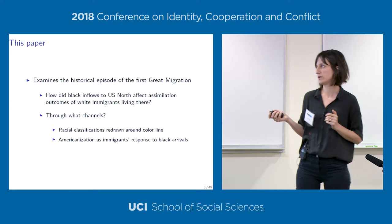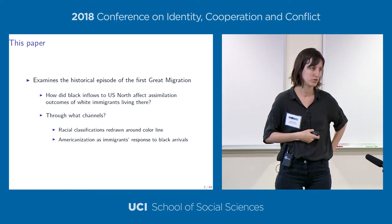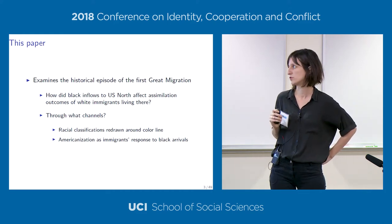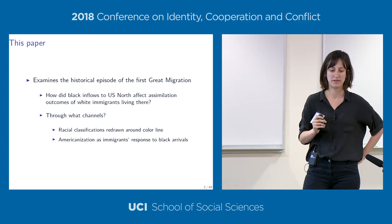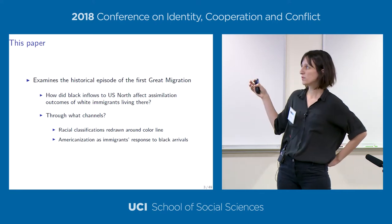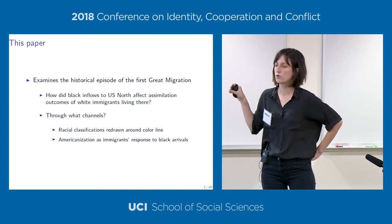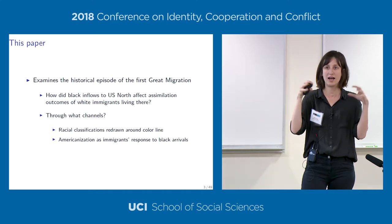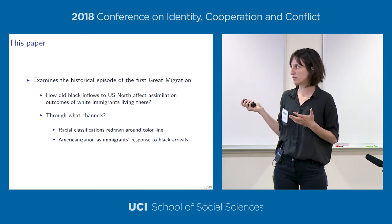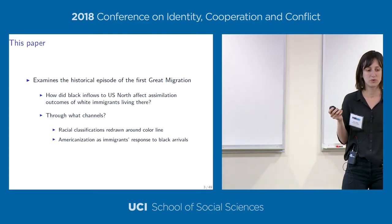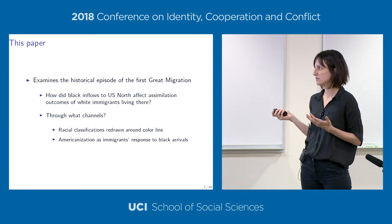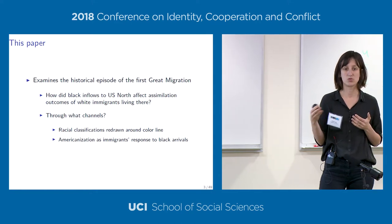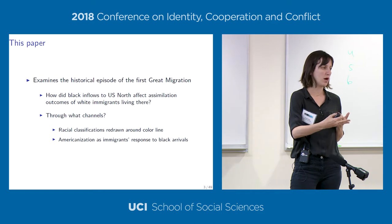We focus on the First Great Migration—the first time African Americans moved out of the South into northern industrializing urban centers during and after World War I, and they moved in large numbers. The question we ask is: how do black inflows to the North affect assimilation? We measure assimilation as immigrants becoming more similar to the native Anglo-Saxon white majority. To preview our results: we do find that the Great Migration helped immigrants assimilate.